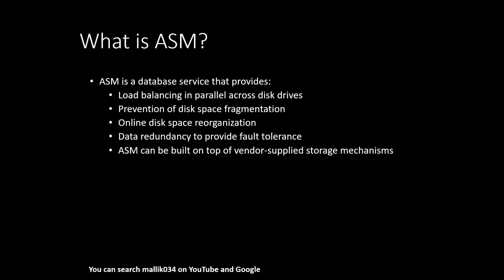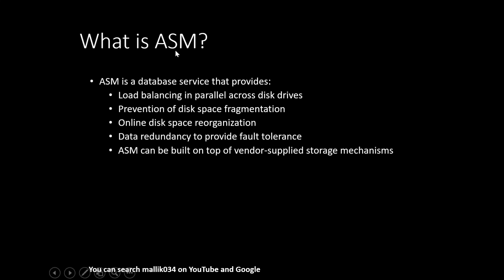Disk fragmentation is one of the bottlenecks in a traditional database setup — if you're accessing only certain parts of the disk regularly and not others, you're not utilizing the disk 100%. ASM avoids this. ASM also provides online disk space recognition, tracking disk status and disk group status online. Data redundancy provides fault tolerance: data is mirrored across disks so if one disk fails, the mirrored copy is available on another.